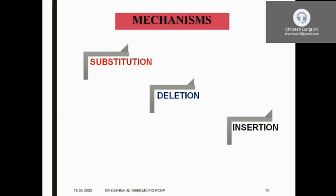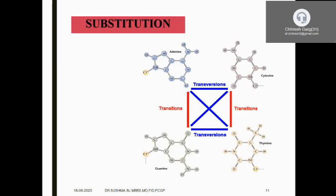The types of mutations are of three types: point mutation, frameshift, and chromosomal mutations. The mechanisms by which mutations lead to disease include nucleotide base pair substitution — for example, adenine may be substituted with cytosine or replaced with thymine. A purine may be replaced with another purine, or a pyrimidine with another pyrimidine — that is called transition. If a purine is replaced by a pyrimidine, that involves deletion or insertion of nucleotide sequences. These are the various mechanisms of point and frameshift mutations.